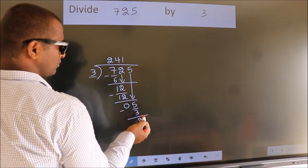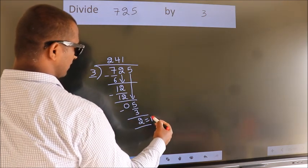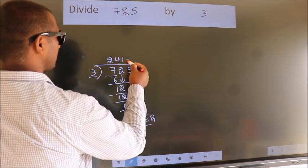No more numbers to bring it down. So we stop here. This is our remainder. This is our quotient.